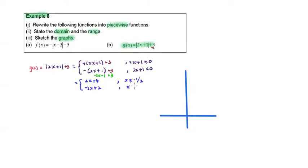This is for x less than negative half. The domain for all modulus functions is from negative infinity to positive infinity. The range for modulus functions refers to the number after the modulus. The number here is 3, and we have positive y. Therefore, the range of function g is from 3 to positive infinity.